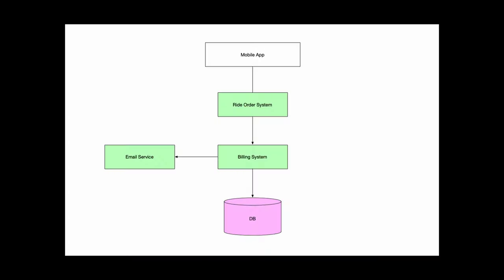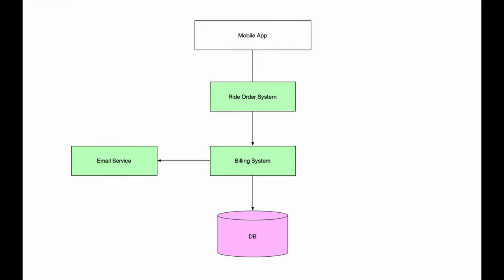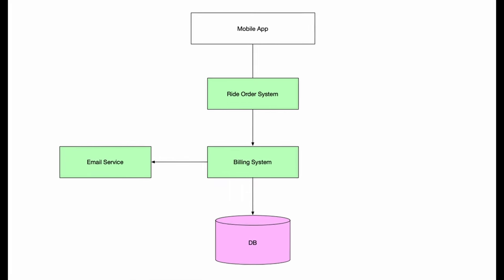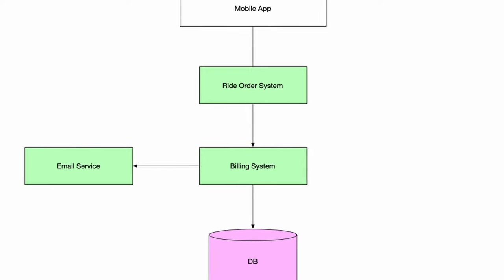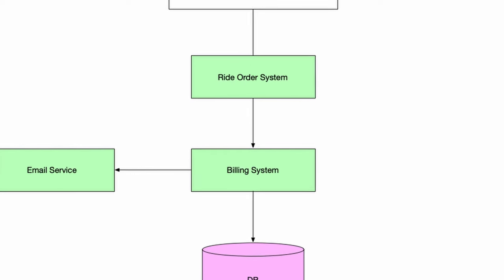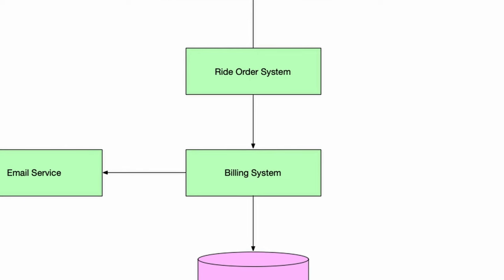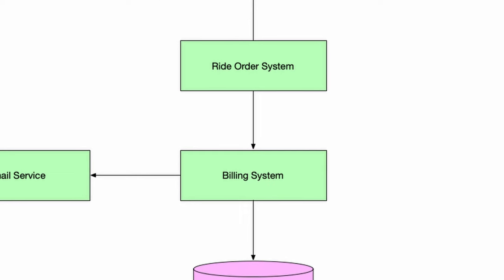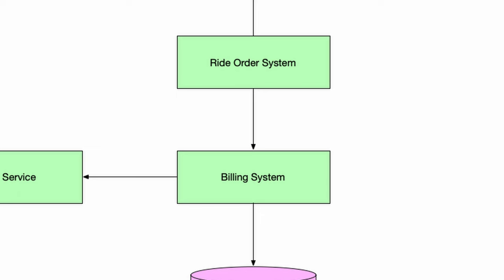Let's take a look at the example. Here you can see a very simplified version of a ride-hailing system. We have a mobile application and then the order system that will match the riders and drivers, and then some money system which will issue invoices, make the payments, and send the invoices through email.